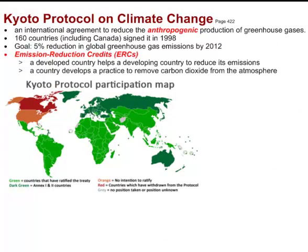A big agreement was the Kyoto Protocol on Climate Change — an international agreement to reduce the anthropogenic, meaning man-made, production of greenhouse gases. 160 countries originally signed this, including Canada, which signed on in 1998. The goal was a 5% reduction in global greenhouse gas emissions by 2012. That was pretty ambitious, and many countries felt they couldn't do it. One of the incentives was what's called Emission Reduction Credits, or ERCs — the idea being that countries could help each other by receiving credit for reducing emissions. A developed country helping a developing country reduce its emissions would gain credit, and if a country develops a practice to remove CO2 from the atmosphere, they would receive carbon credits.